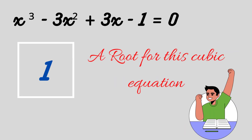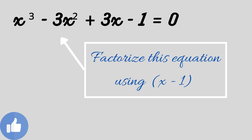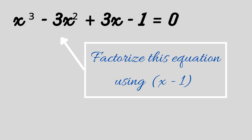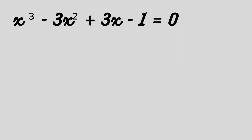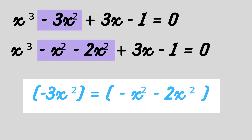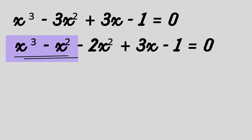Now we will learn how to factorize this equation using (x - 1). We found the first root by hidden trial which was 1, so we factorize in the form of (x - 1). Look at the equation carefully: x³ - 3x² + 3x - 1 = 0. We can write -3x² as -x² - 2x².